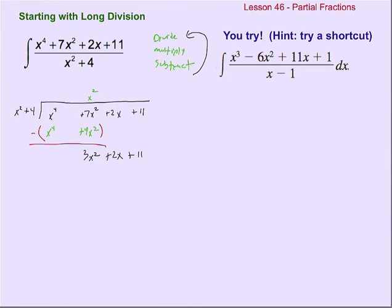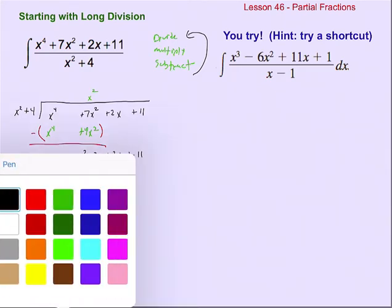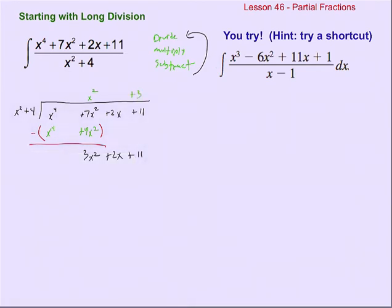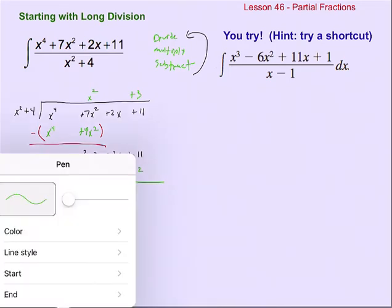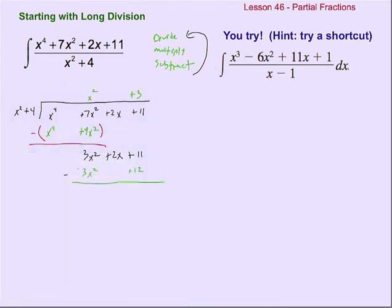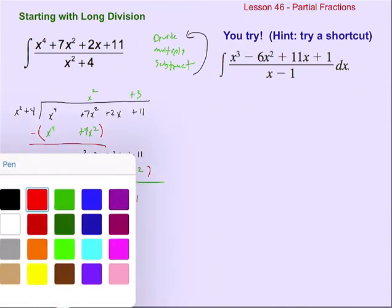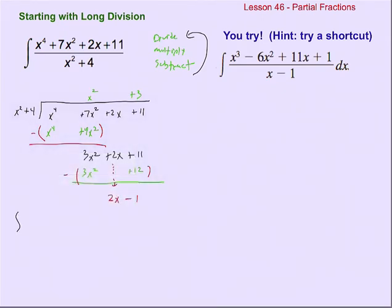Divide: 3x squared divided by x squared is 3 — that goes in the top row. Multiply: 3 times x squared plus 4 gives 3x squared plus 12. Then subtract. The 2x, since we're not subtracting anything from it, stays as 2x. So the remainder is 2x minus 1. The result is the integral of x squared plus 3 plus 2x minus 1 over x squared plus 4, with respect to x.